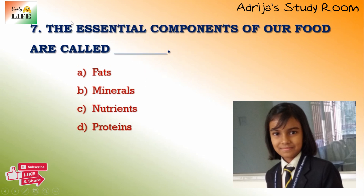Next question: the essential components of our food are called what? The options are fats, minerals, nutrients, and proteins. We know that fats, minerals, and proteins are all kinds of nutrients. So the essential components of our food are called nutrients — not only fats, not only minerals, not only proteins. The answer is C.